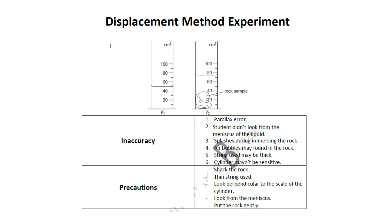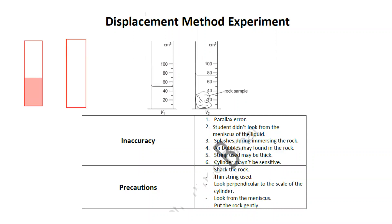Sometimes instead of directly placing the rock, we tie it with a string or wire and lower it into the measuring cylinder. However, if we use a thick string or wire, it will be inaccurate because the volume of the string or wire is also being measured, leading to an inaccurate result.